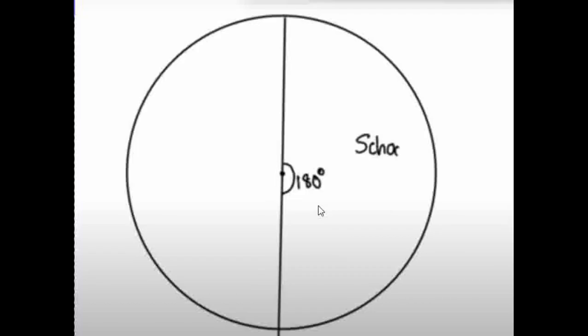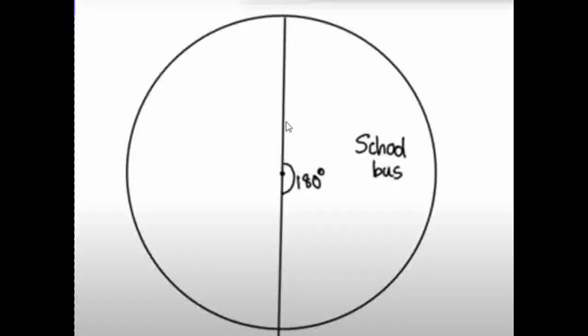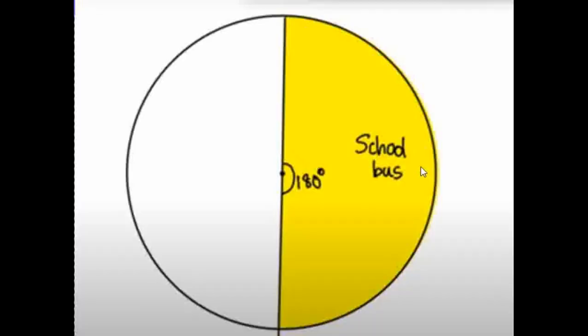This is a school bus. This is a circle. There are two different ones — one is on the school bus. This means there are two different ones. Okay, this is walking. Walking is 135 degrees, right?